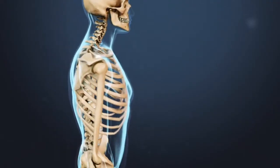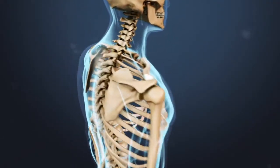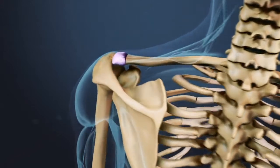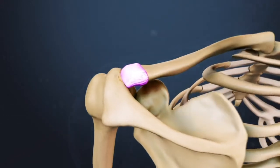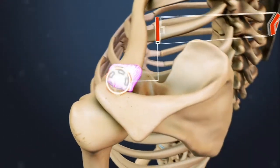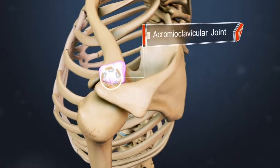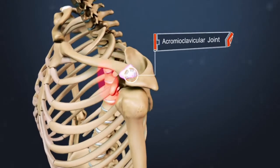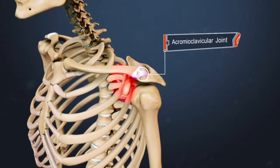Acromioclavicular osteoarthritis is a type of shoulder arthritis that involves degenerative changes to the cartilage and other structures in the acromioclavicular joint, leading to pain, stiffness, and weakness in the front of the shoulder.